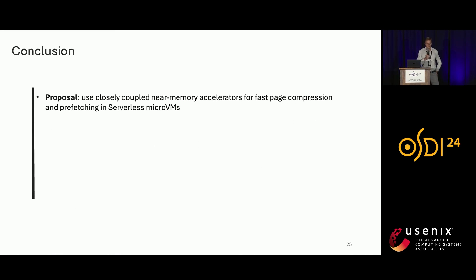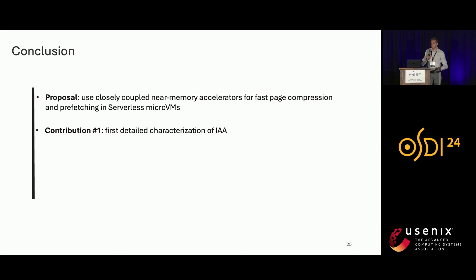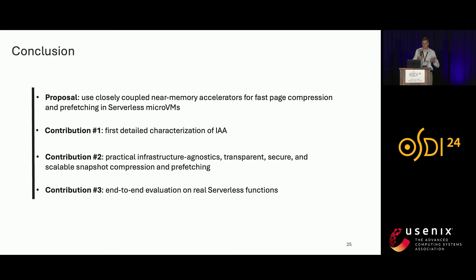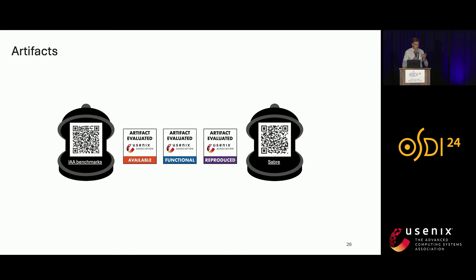To conclude: we propose using closely-coupled near-memory accelerators for fast page compression and prefetching in serverless micro VMs. We perform the first detailed characterization of the IAA hardware and build a practical, infrastructure-agnostic, transparent, and scalable solution for compressing and prefetching snapshot pages for micro VMs, integrated with end-to-end serverless functions. Our benchmarks and system are open-sourced, and Sapphire Rapids CPUs with IAA are already available in public clouds.